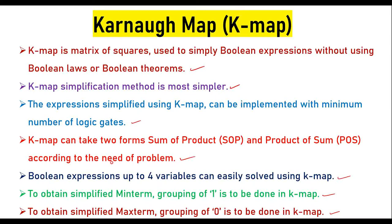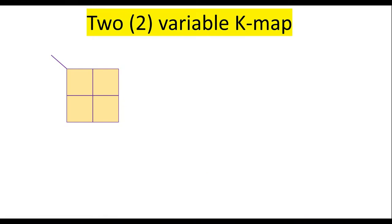Now we will see all these properties in KMAP considering a two-variable KMAP, three-variable KMAP, and four-variable KMAP. Let me explain how to use and represent a two-variable KMAP. Two variable KMAP has two-to-the-power-two equal to four cells.